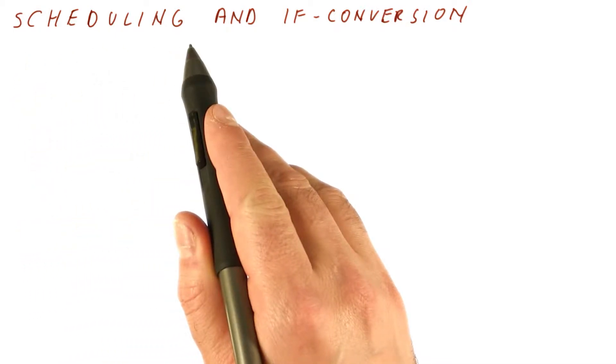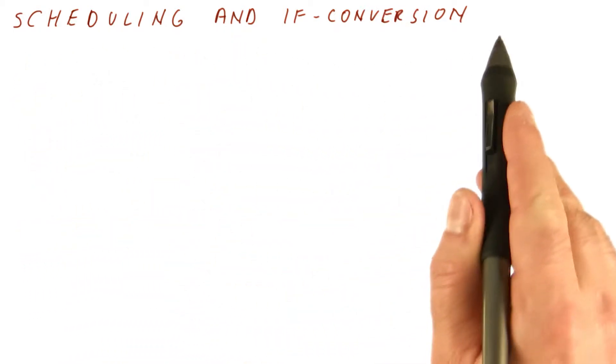Now that we have seen how instruction scheduling works, let's see how it interacts with things like if-conversion.